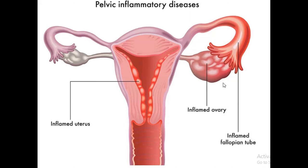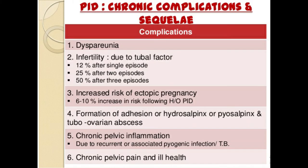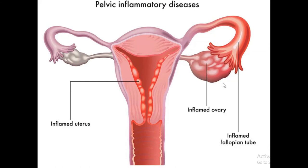Some complications of PID include ectopic pregnancy, infertility, and chronic pelvic pain. To treat PID, your doctor would advise you to practice safe sex, get your partner checked out, and they'll give you antibiotics to get rid of the bacterial infection. They'll also recommend temporary abstinence.